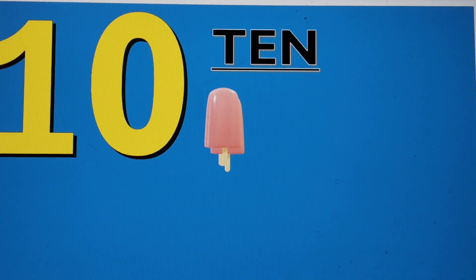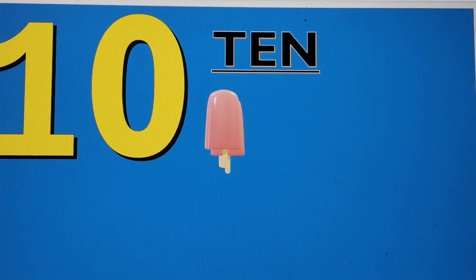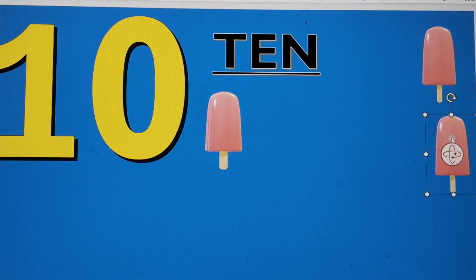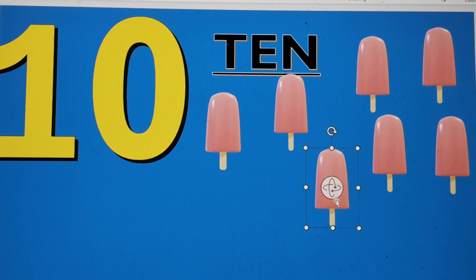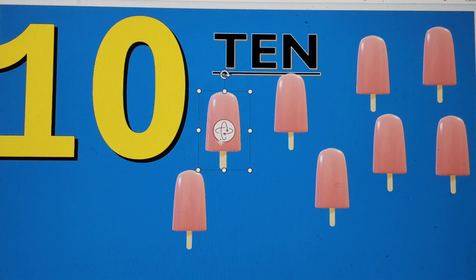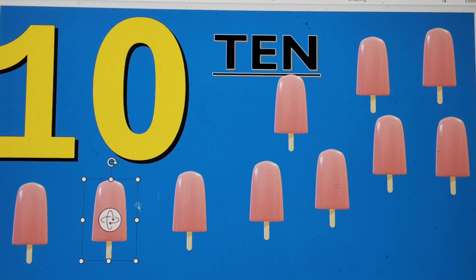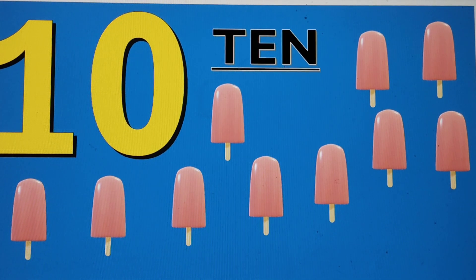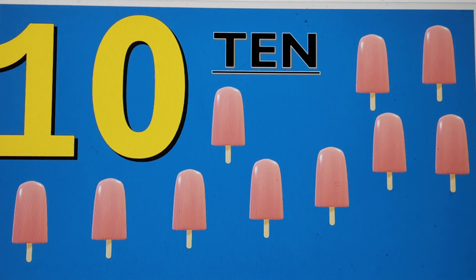And the last number is number 10. One, zero, ten. T-E-N, 10. Let's make ten ice creams: one, two, three, four, five, six, seven, eight, nine, ten. Ten ice creams are here!